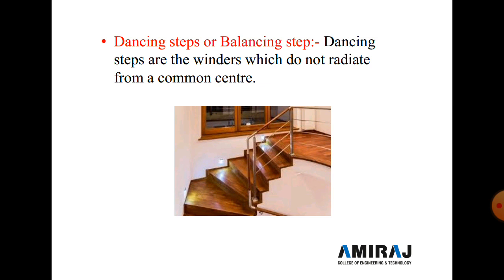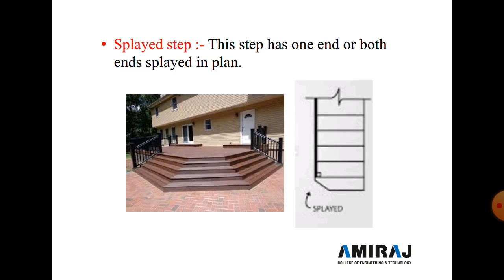The next type is the splayed step. This type of step has one or both ends splayed in plan. Splayed steps are generally provided at the main entrance and at the starting of steps inside a residential building. In the first step, one corner is cut at a 45-degree angle. When a splayed step is provided at the starting of the building, as seen in photo number one, it allows easy access from three sides.